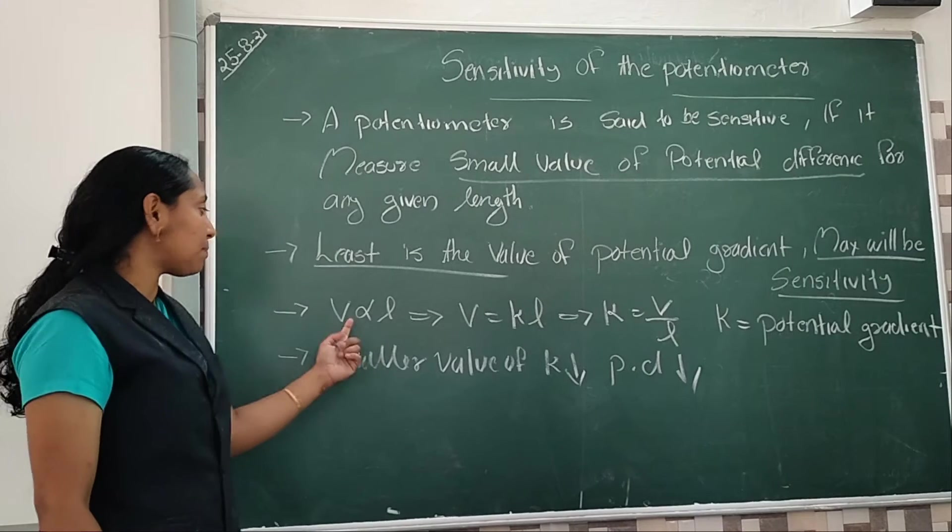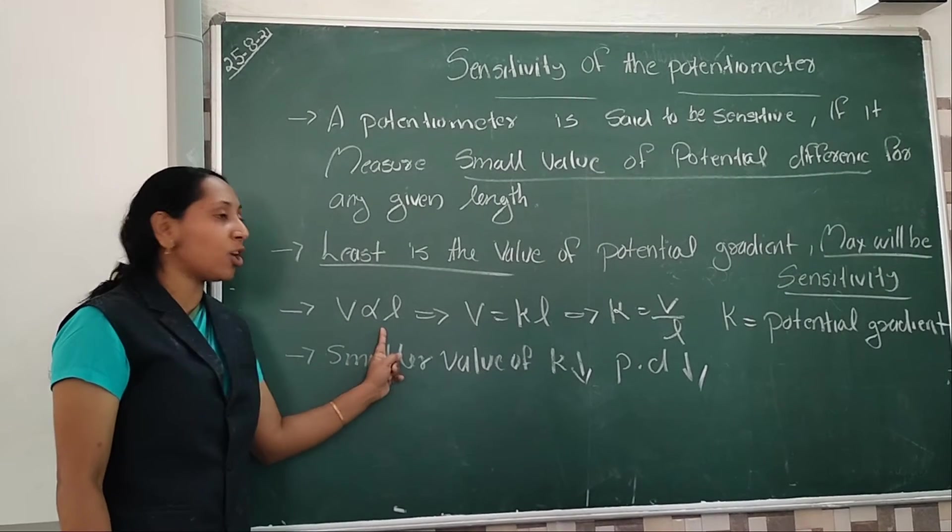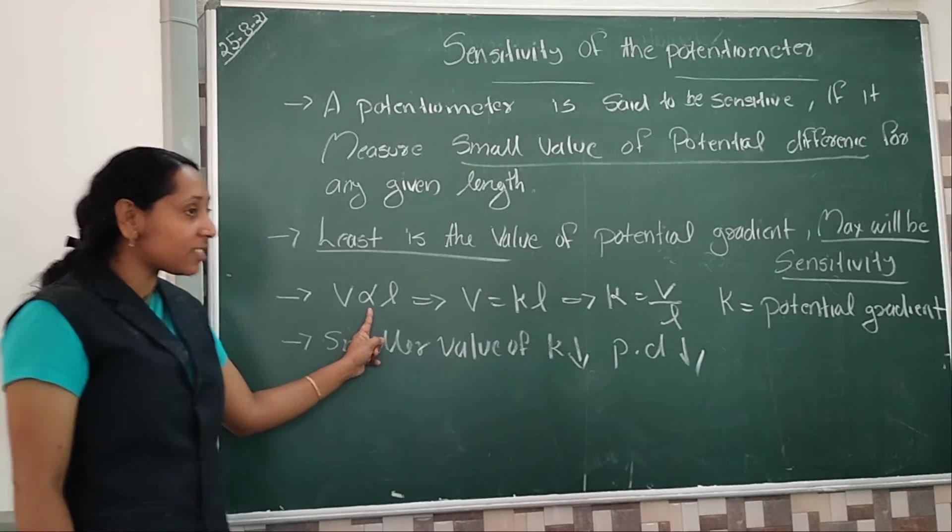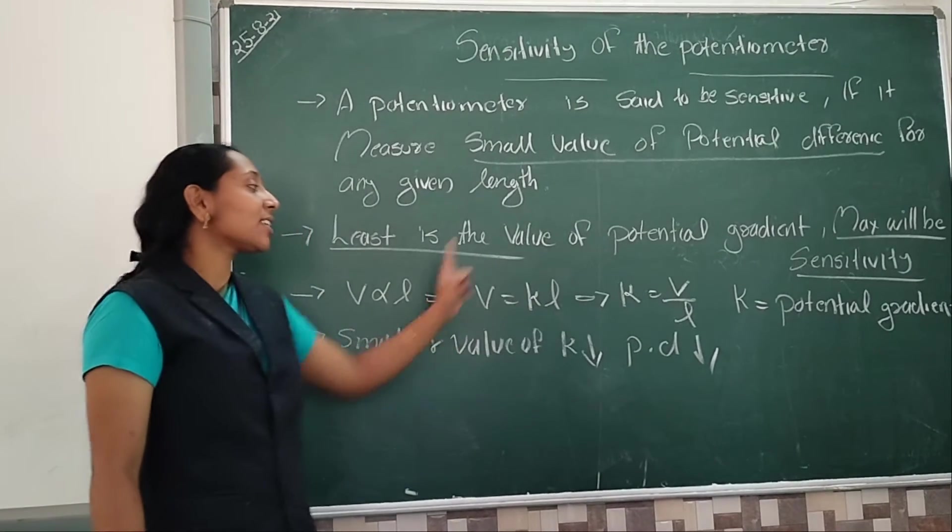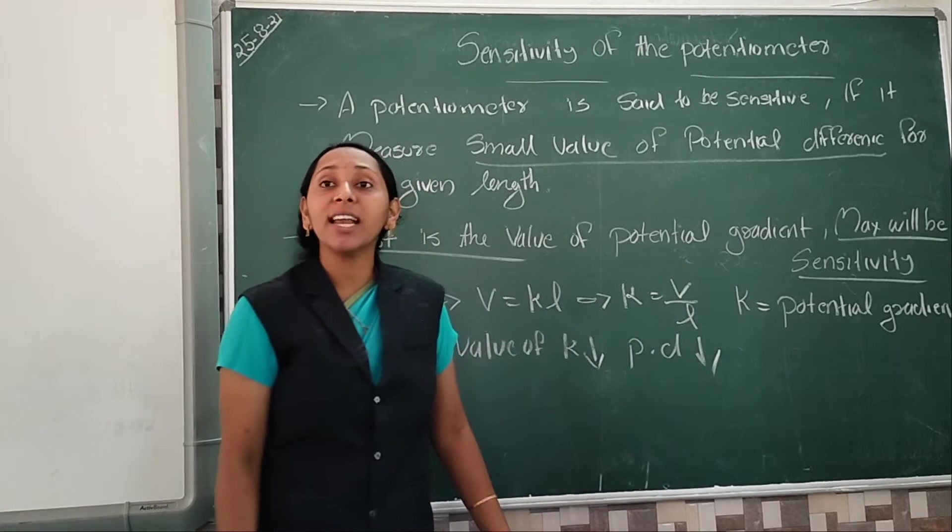We already know the expression or otherwise the basic principle of the potentiometer. So we have to change the V proportional to L. Change the proportionality adding a constant K. So V equal to K L. This K means V by L. This K is called as potential gradient.